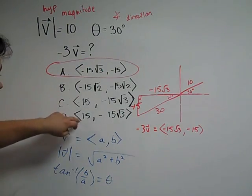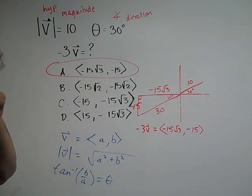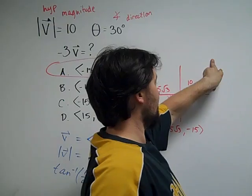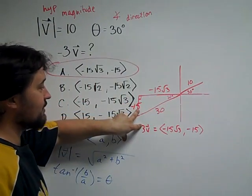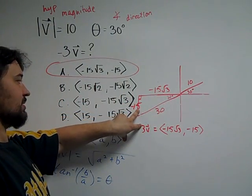It should make sense that all of these X and Y coordinates are negative, because if we were in quadrant 1 for V, negative 3V will have to be in quadrant 3, where both the X's and the Y's are all negative.